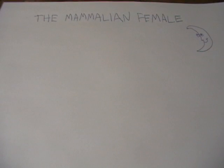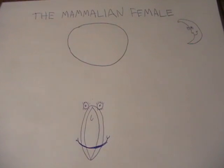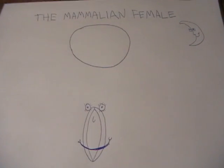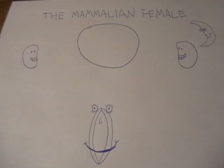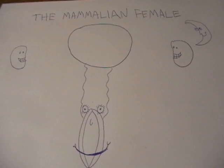The female reproductive system likewise contains two main divisions: the vagina and uterus, which act as the receptacle for the sperm, and the ovaries, which produce the female's ova. All of these parts are always internal. The vagina is attached to the uterus through the cervix, while the uterus is attached to the ovaries via the fallopian tubes.